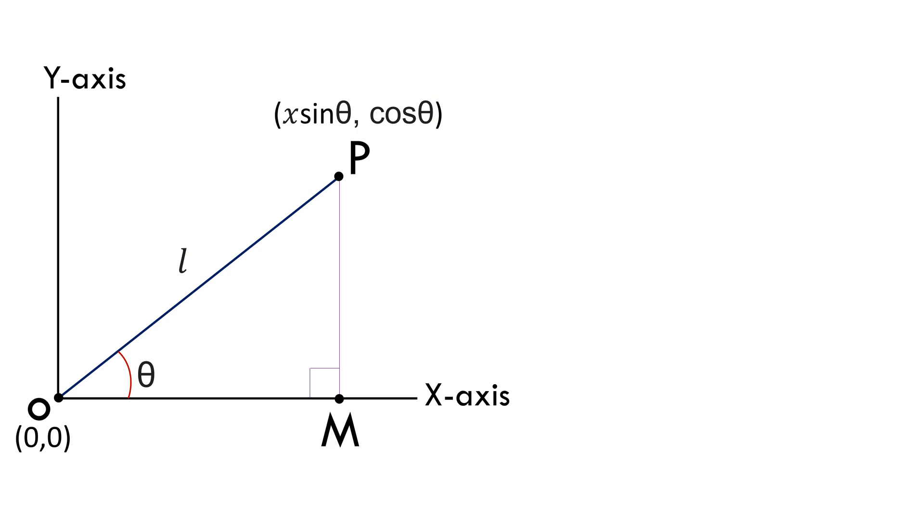Now, with the help of theta, let's try to find out the lengths of OM and PM. Simply applying the cos ratio for angle theta in triangle POM, we get cos theta equals to OM by l, or OM equals to l cos theta.